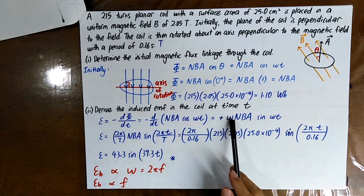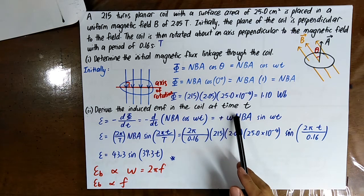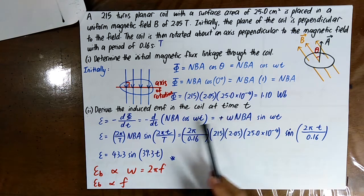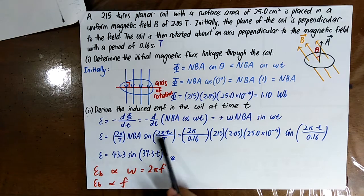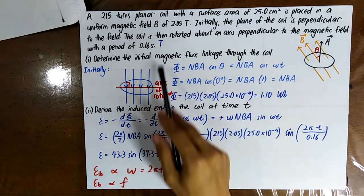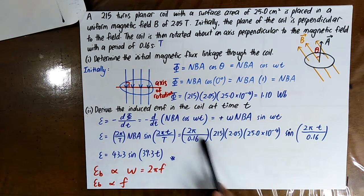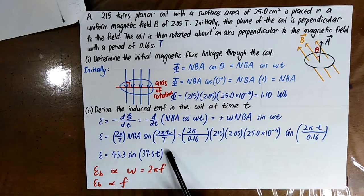What is ω? ω is the angular velocity, which is the angular frequency. ω = 2πf = 2π/T, where T is the period. Substitute everything and you can express the induced EMF as a sine function.